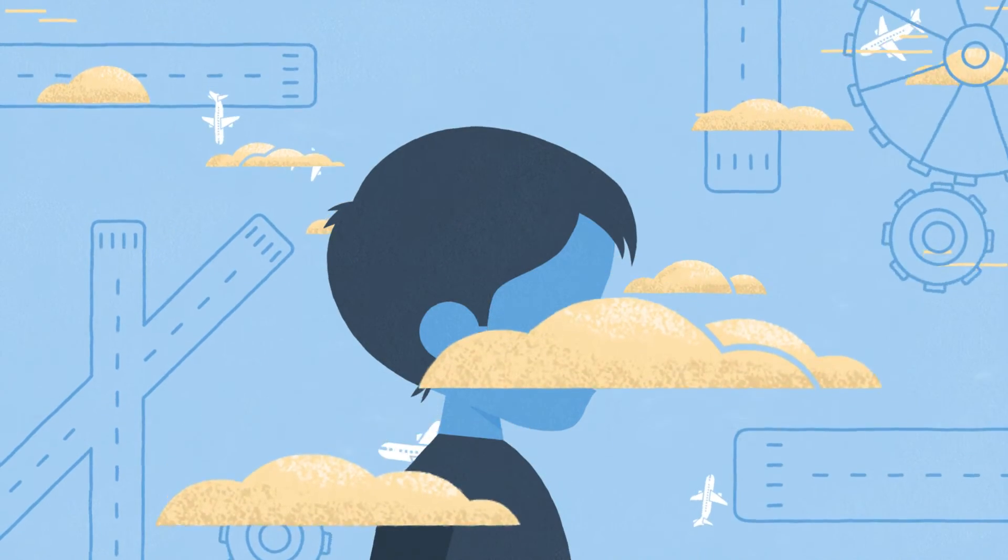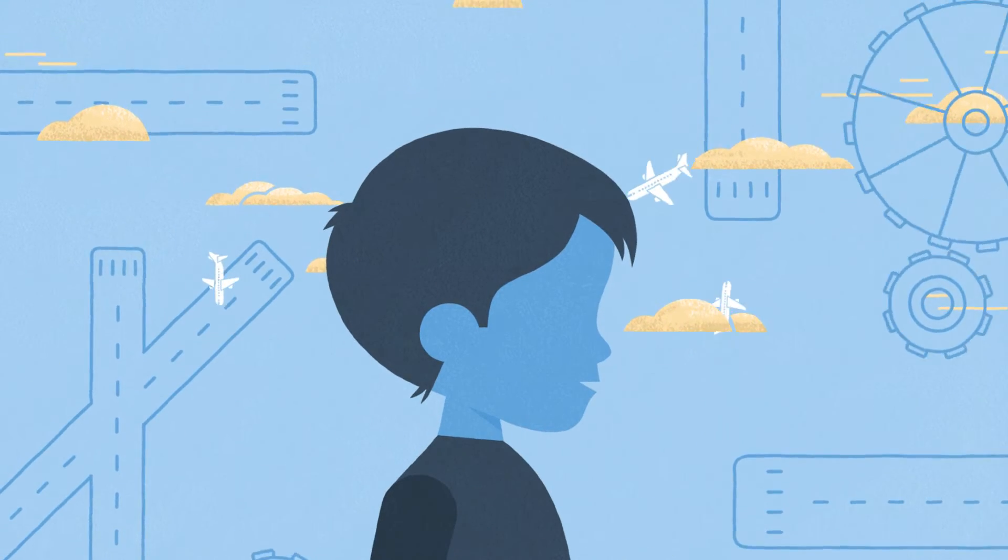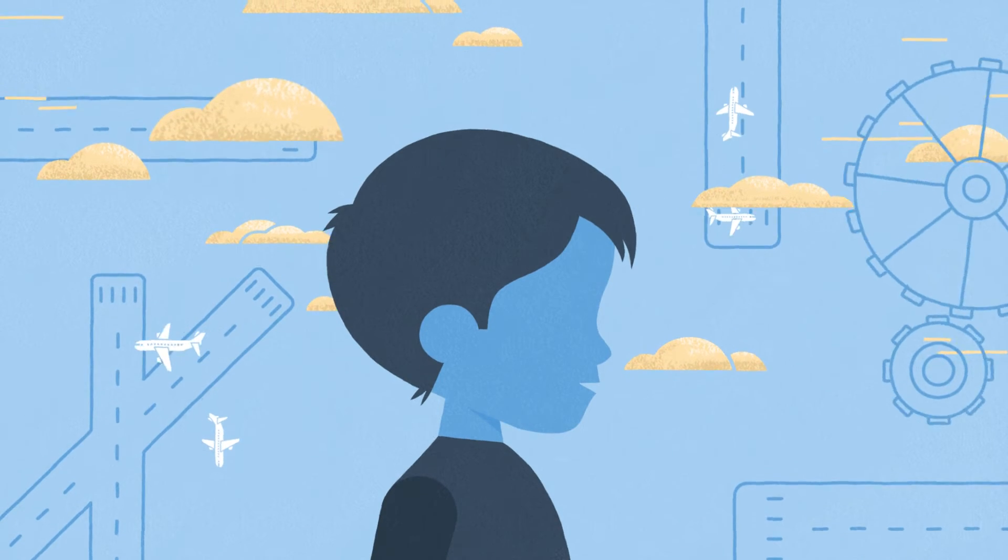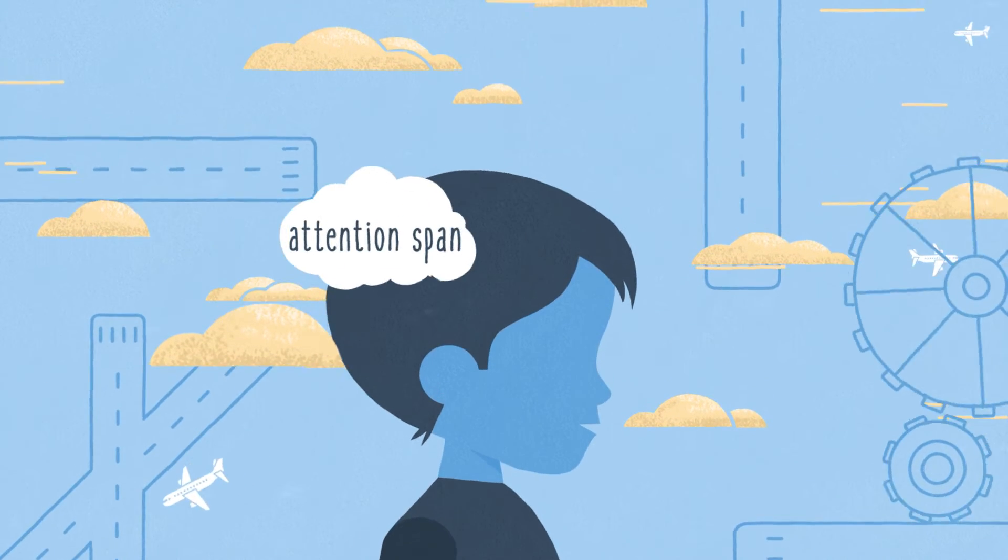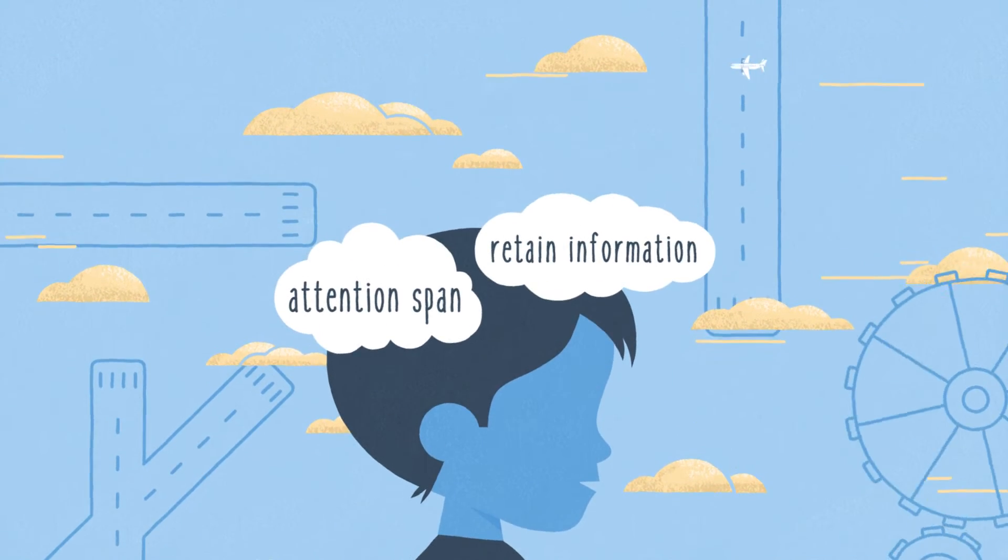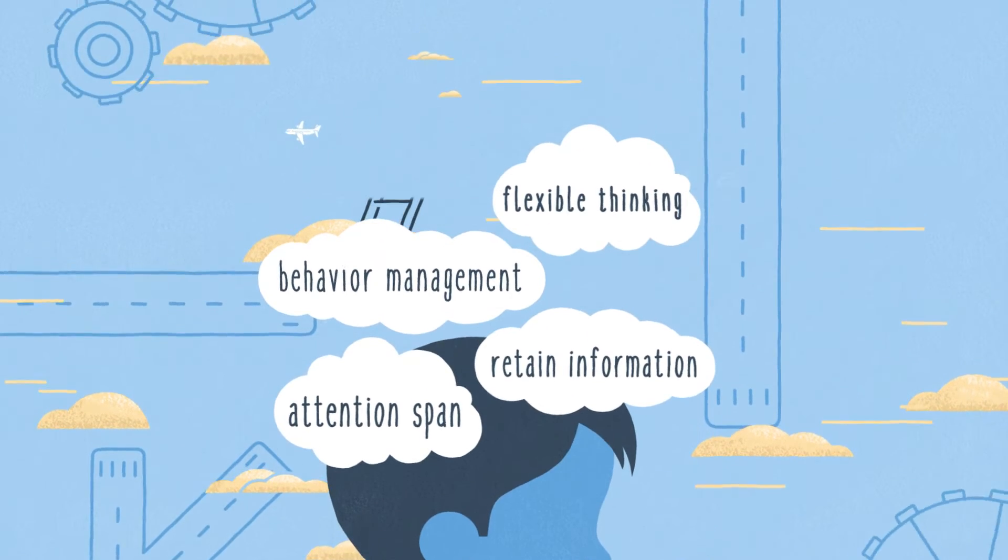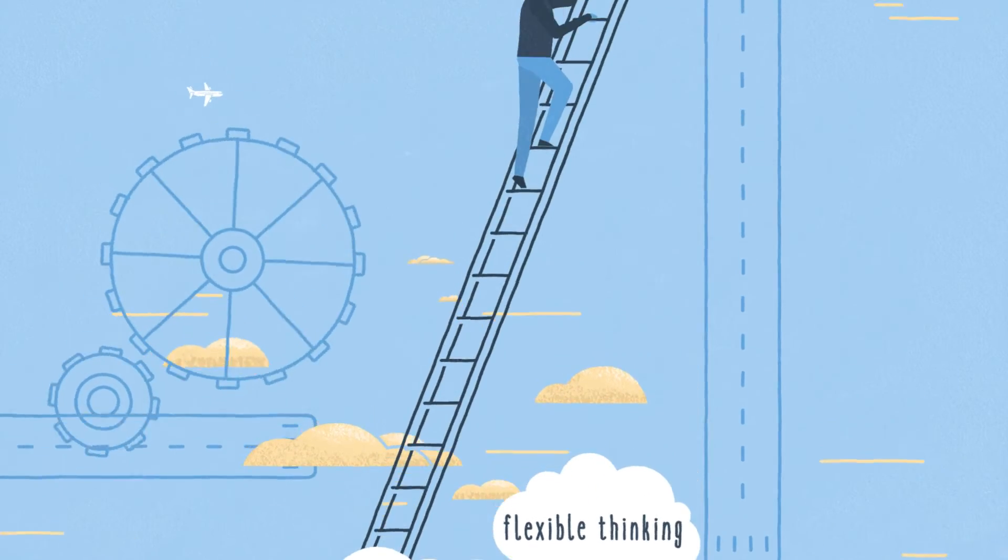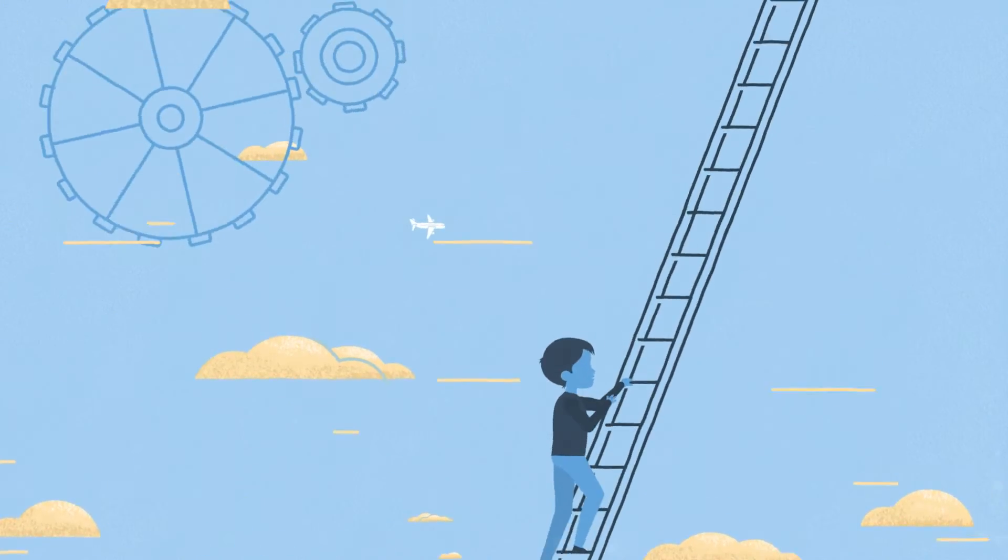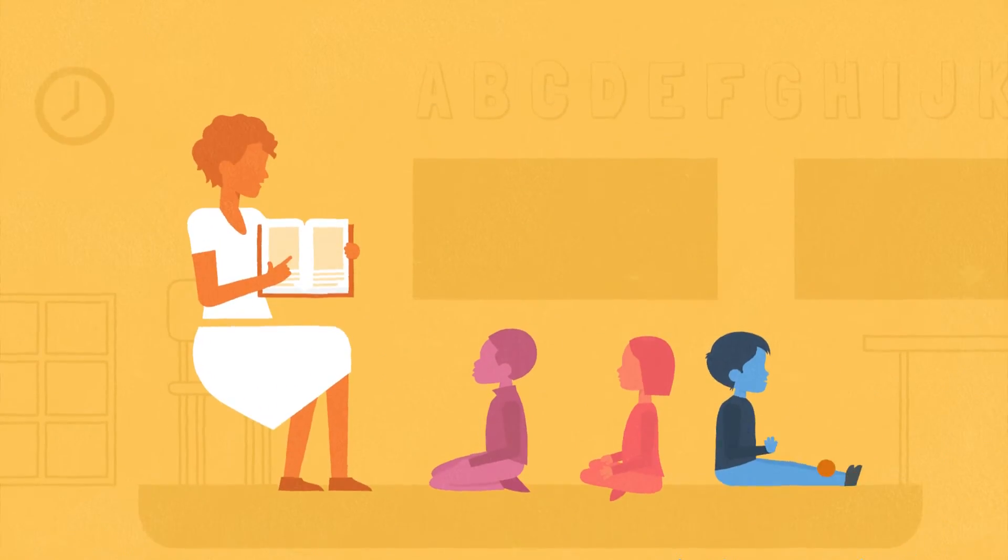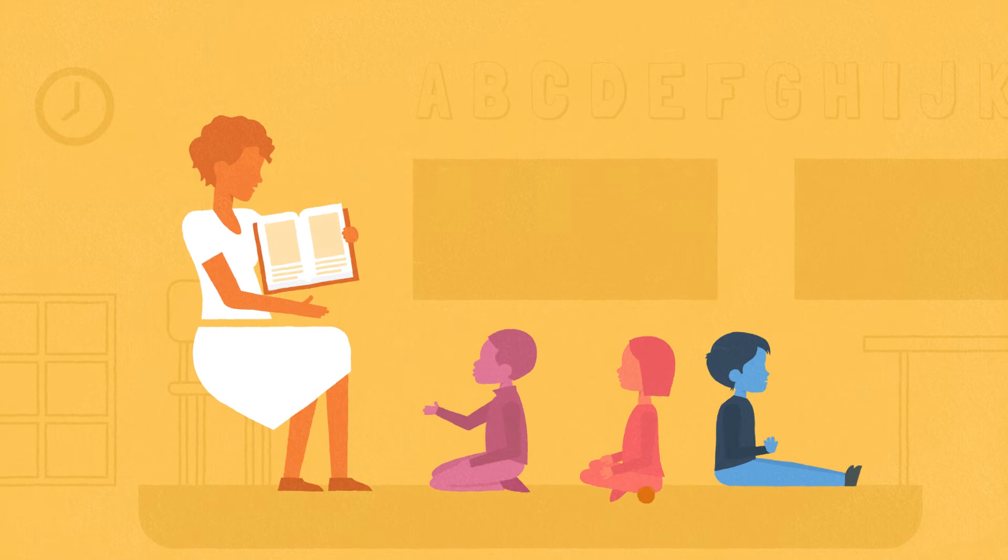Often called the air traffic control system of the mind, executive function is a set of cognitive skills that allow children to pay attention, keep information in mind, manage their behavior, and think flexibly. It's no surprise then that executive function is a powerful predictor of healthy, lifelong development, including emotional intelligence and academic success.